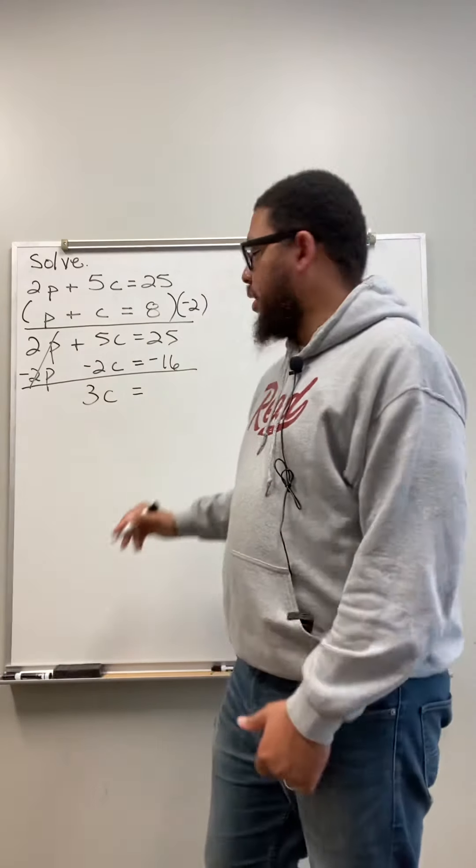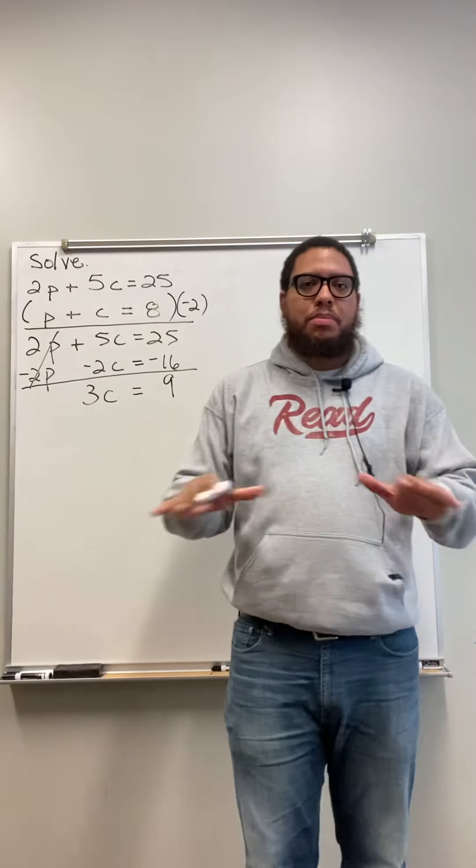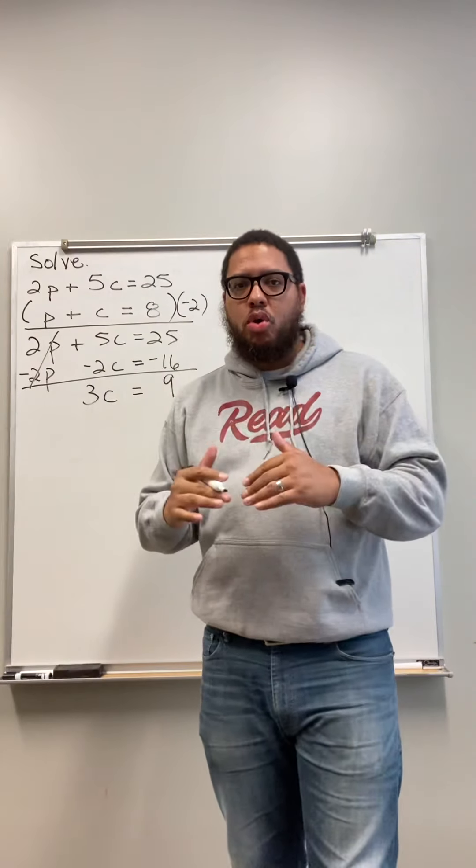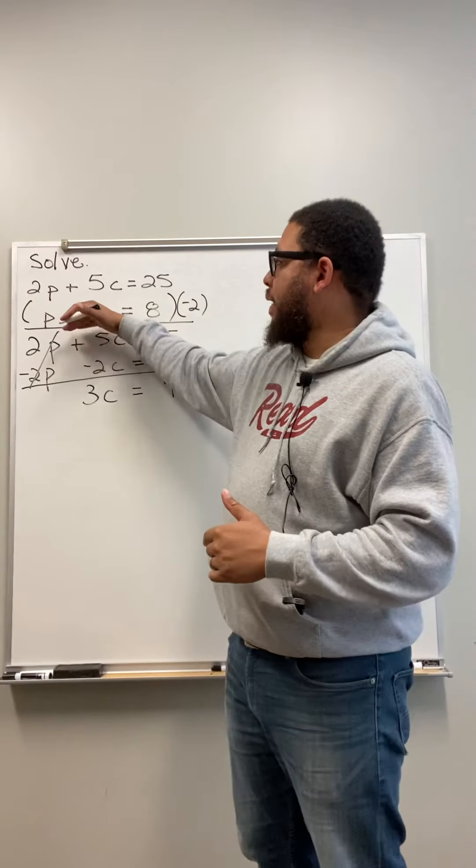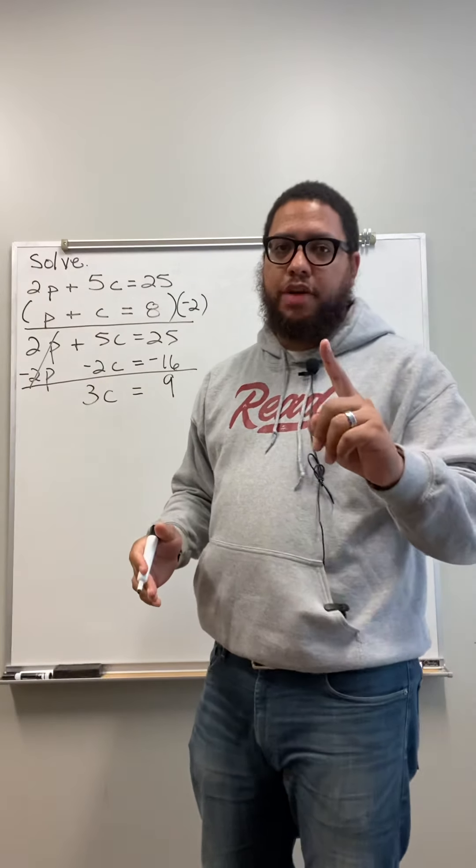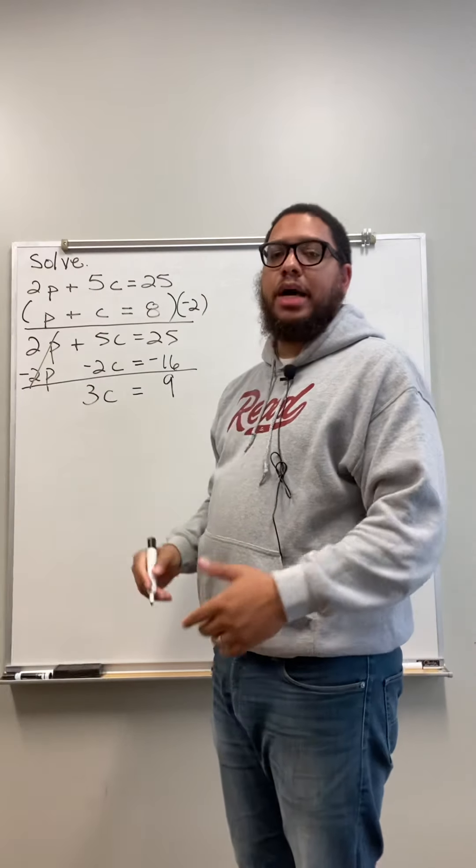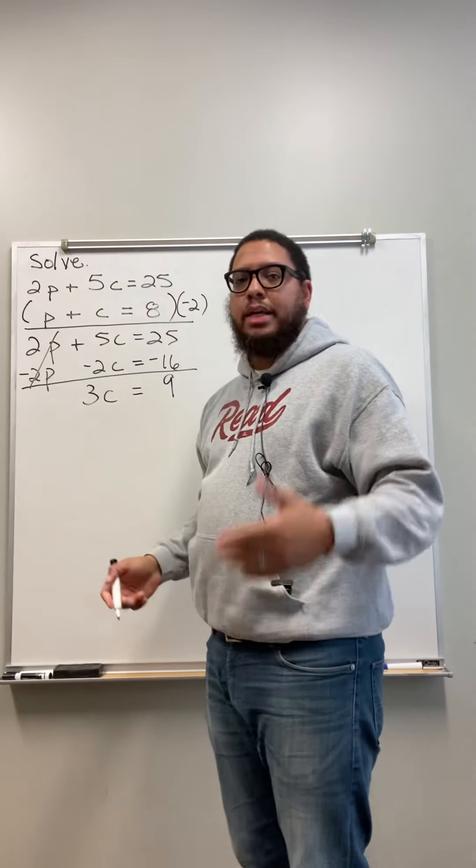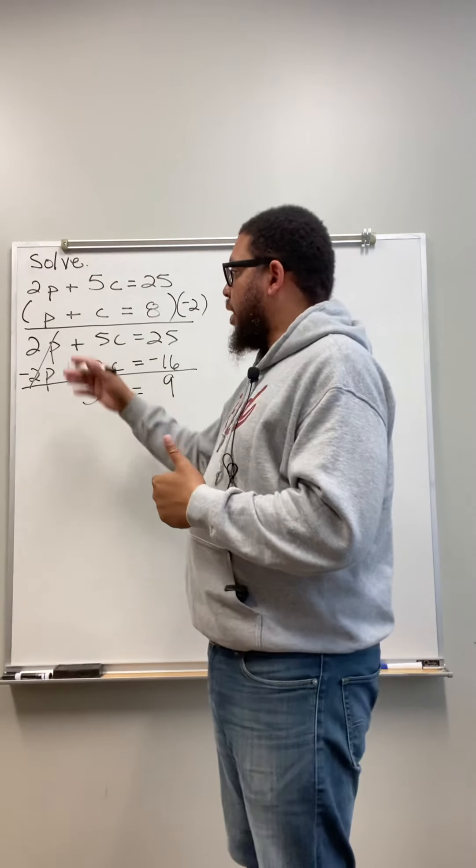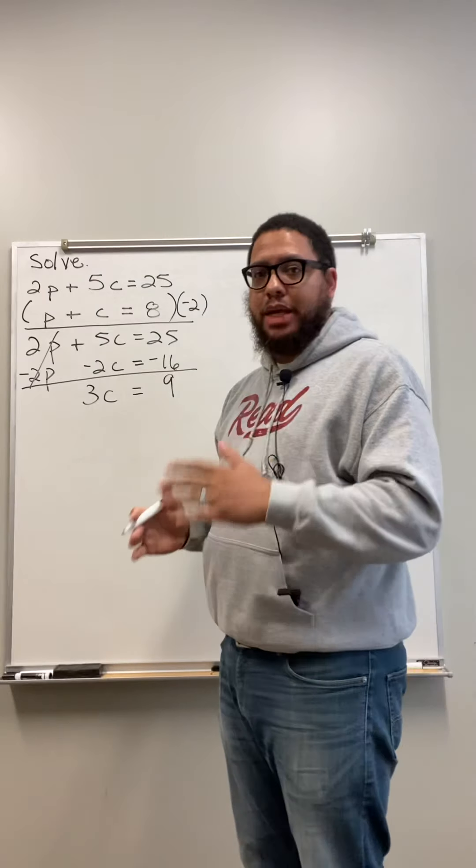So now I got 3C equals 9. So now I got a simpler equation with one variable. That's the whole goal. The goal of combining these or adding these together is to create a simpler equation with just one variable. And we only have one variable now because we cancelled out one of them or we eliminated one of them. That's why this method right here is called the elimination method. Because we eliminate one of the variables.